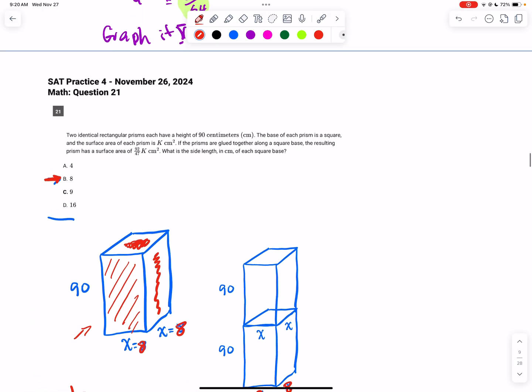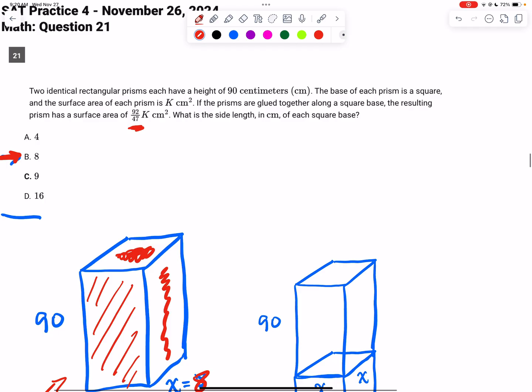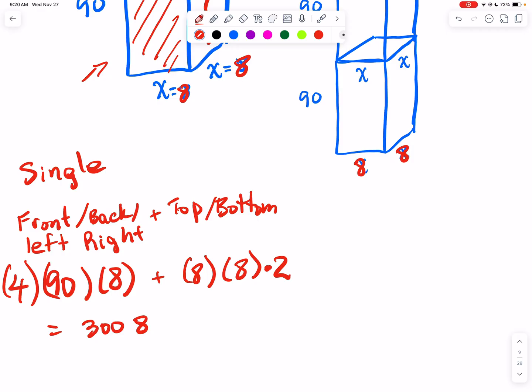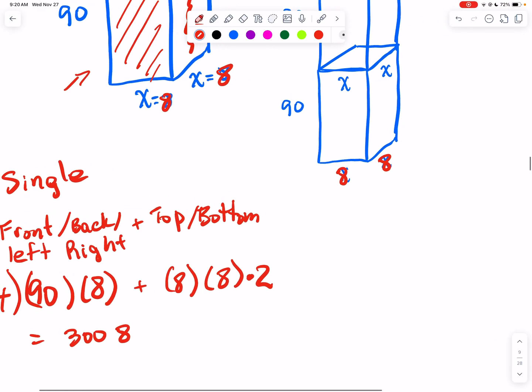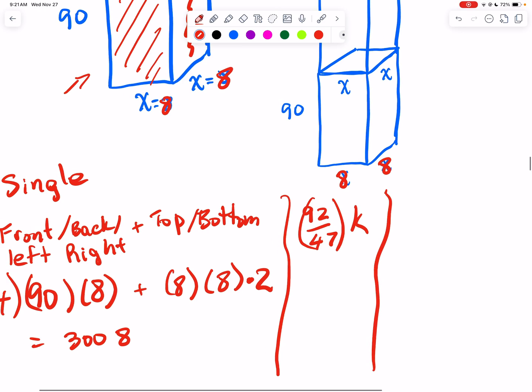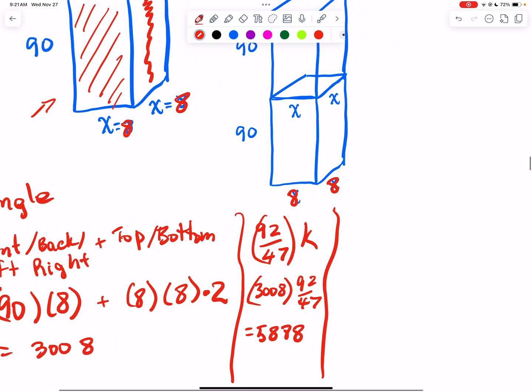What do we do with that number? Scrolling back to the top of the question, it says that the new surface area for that stacked figure here, the tall one, is 92 over 47 times that number. So that other surface area should be 3,008 times 92 over 47, and when you work that out you get 5,888.